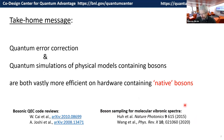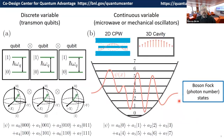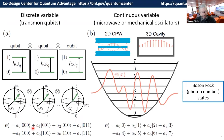Let's remind ourselves of some basic facts. If I have a discrete variable system — say transmon qubits or some approximately two-level system — then with N qubits your total Hilbert space has 2^N states. For three qubits you can label the states in the standard basis by the state of the individual qubits, numbering them from zero to seven using the binary representation.